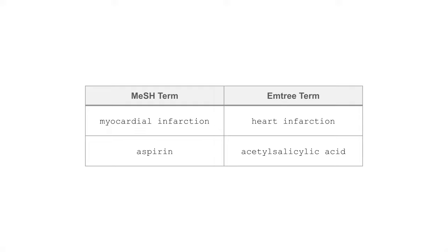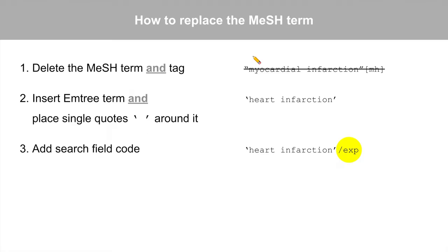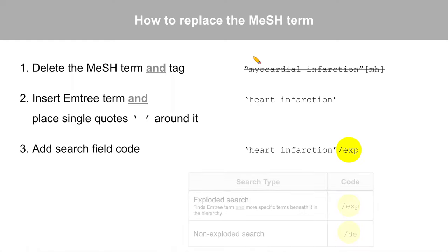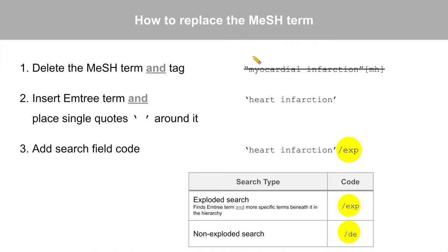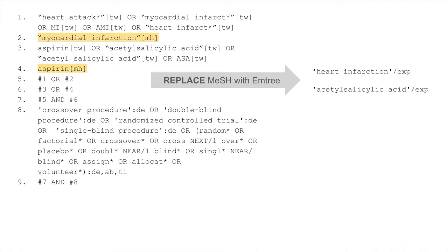Using the quick search box, I found that the corresponding mTree terms are heart infarction and acetylsalicylic acid. To replace the MeSH term, delete the term and don't forget to remove the search tag. Next, insert the mTree term, placing single quotation marks around it. And finally, add the appropriate search field code. Typically, we use an exploded search, which finds the mTree term and the more specific terms beneath it in the hierarchy. The field code is forward slash exp. Another option is the non-exploded search, which finds the mTree term only — the field code is forward slash DE. Let's replace the MeSH terms in our strategy with mTree terms using an exploded search. Here's the search strategy after translating the controlled vocabulary.